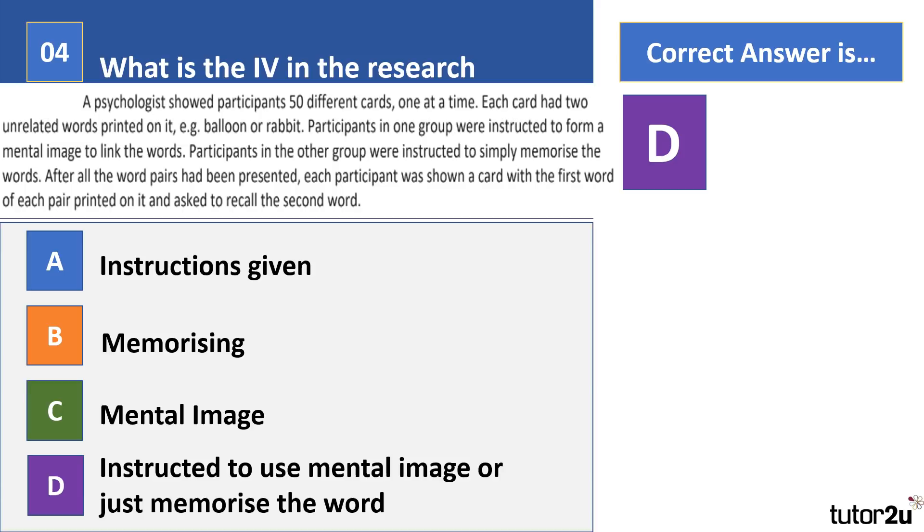The key difference between them is that D is the operationalized independent variable. To operationalize an independent variable, you need to include details of the different conditions. For example, in Loftus and Palmer's experiments, if I was to use the IV 'verbs,' it's not operationalized. However, if I were to say verbs used: smashed, collided, bumped, hit, contacted, that would be operationalized. It's really important that if asked to pick out the IV or dependent variable from a stem that you make sure it's operationalized, because if you fail to do so, you're going to lose marks.